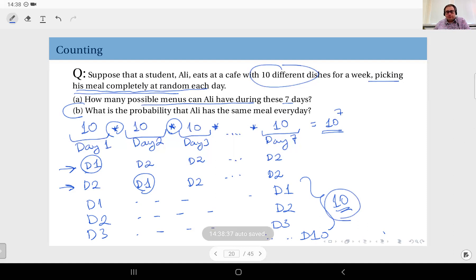Therefore, we have 10 outcomes in our event. And using Laplace's principle, the answer to this is 10 divided by 10 to the power of seven, which is one in a million. To sum up,